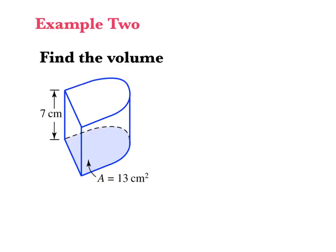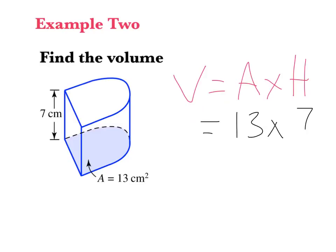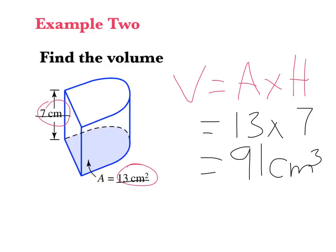Now let's look at the next example. This one has a weird shape at the bottom, but the question has already given me the area. I know volume equals area multiplied by height, so all I need to do is substitute in: 13 centimeters squared multiplied by 7, which gives 91 centimeters cubed. I checked that my units were the same, substituted in, and gave my answer in centimeters cubed. That's how you work out volume.